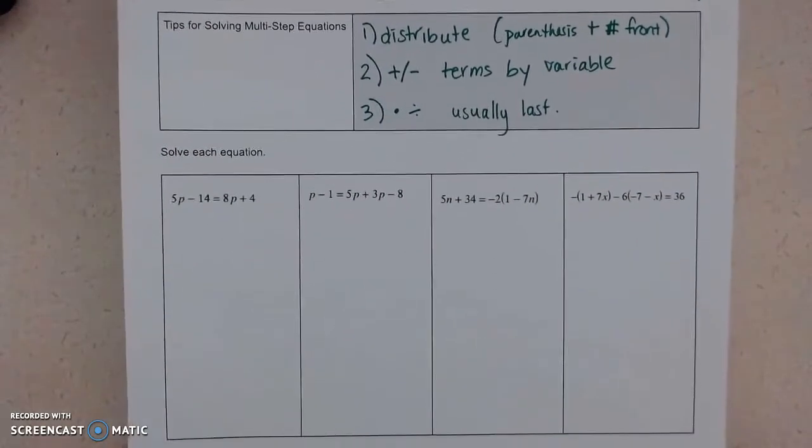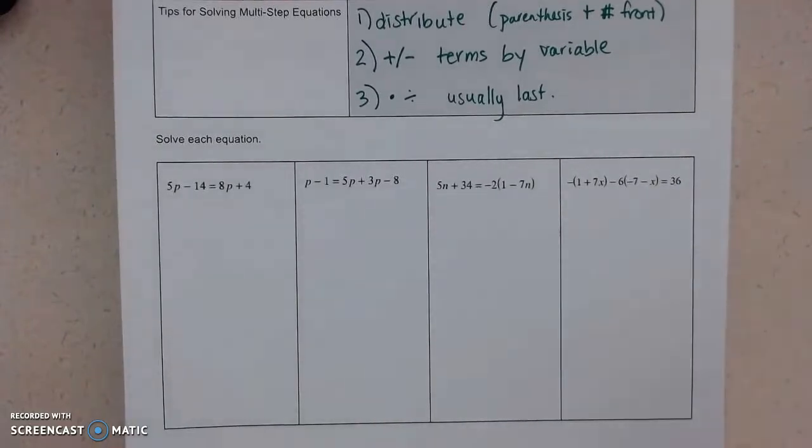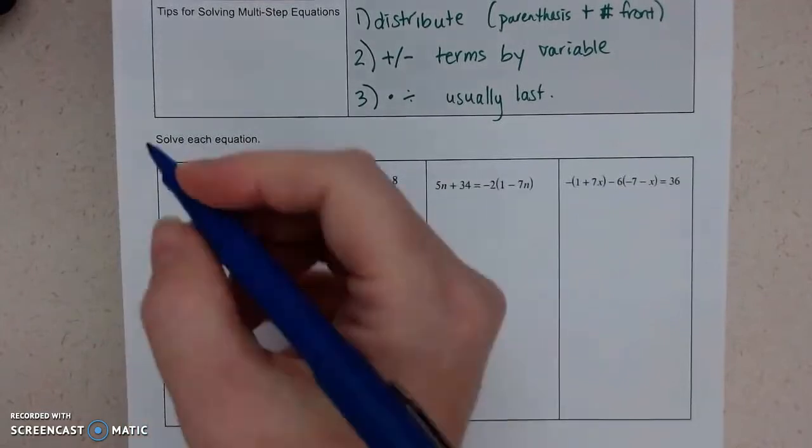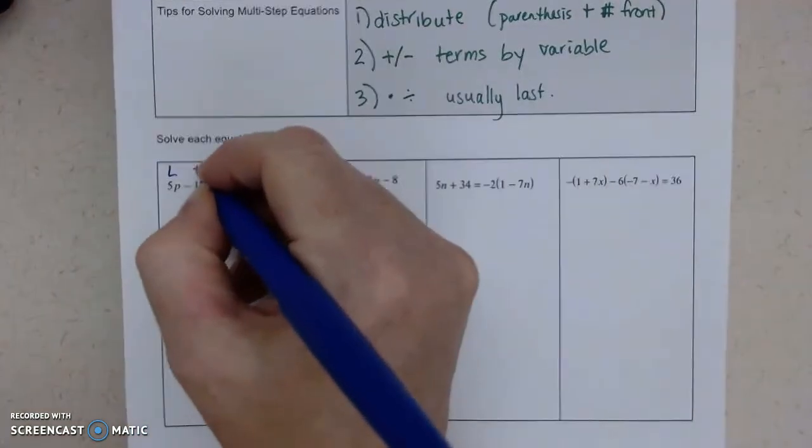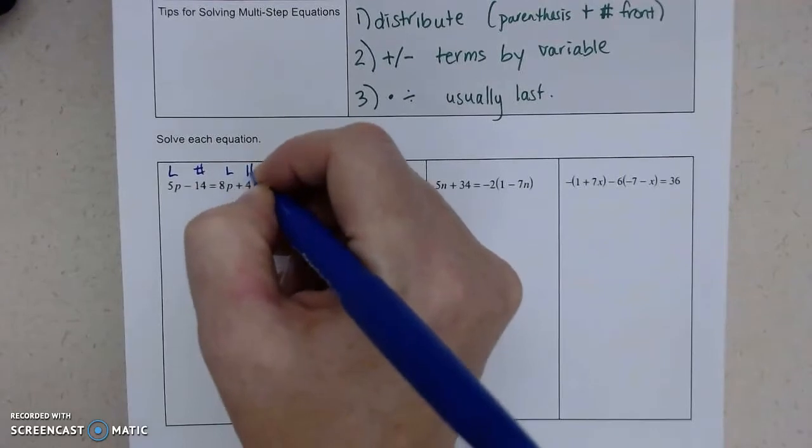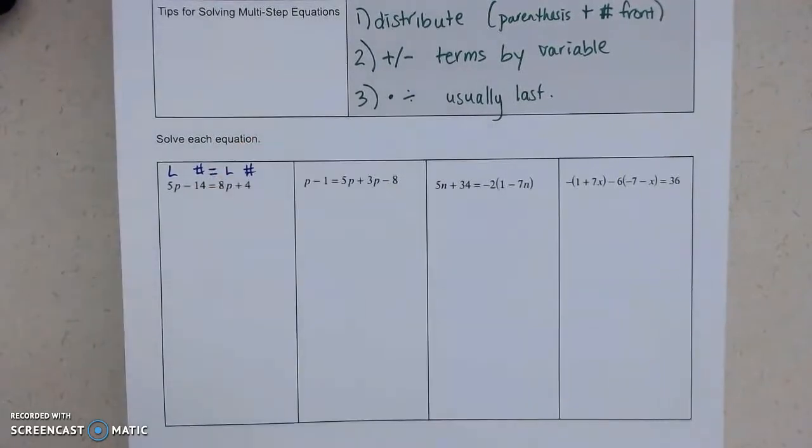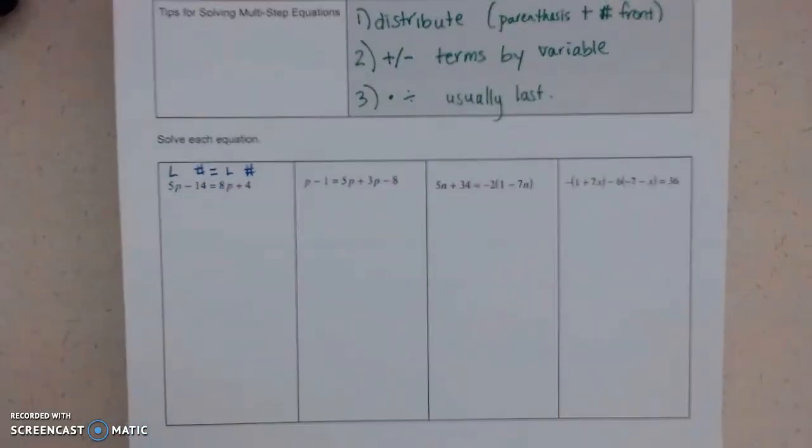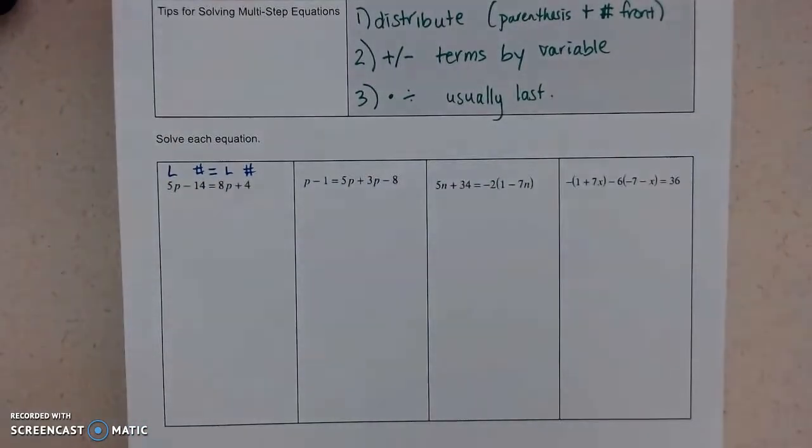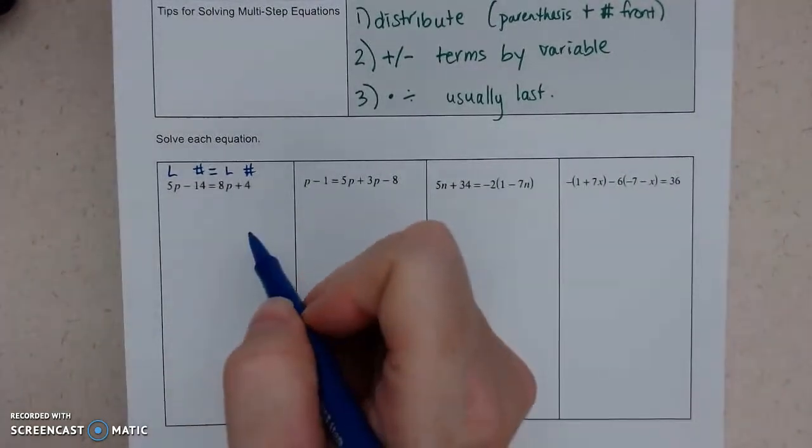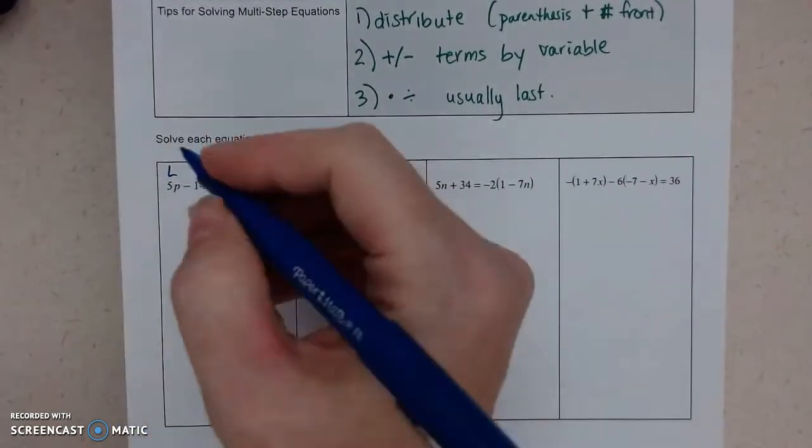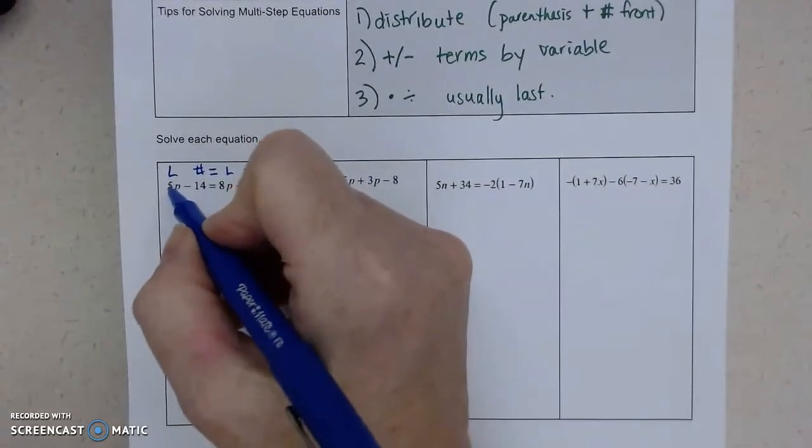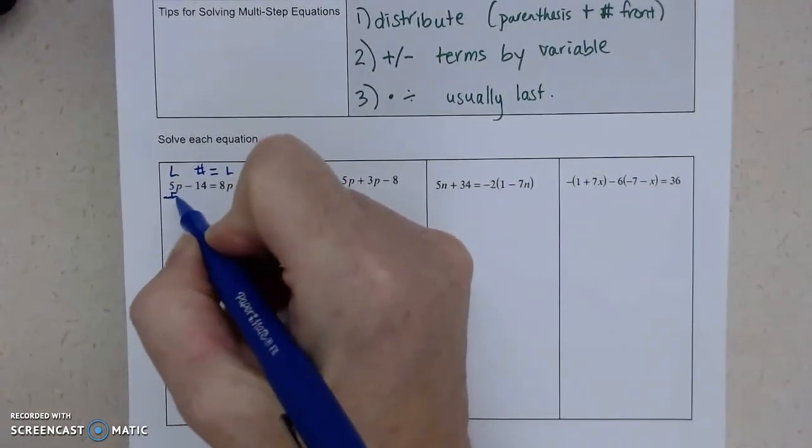All right, so let's look at the first equation. I've got four examples, and they're all slightly different. So if I look, I've got a P term, a number. So I'll say letter, number, there's a letter, and a number. We're concerned with the equal sign. So I need to pick if I want my letters to the left or to the right. Some people move the smaller one. Some people always move it to the left. So I'm going to go ahead and just move the smaller term. So the opposite of 5P is subtract 5P.